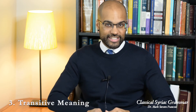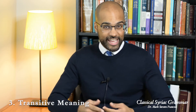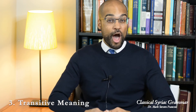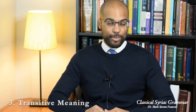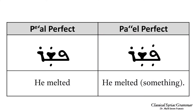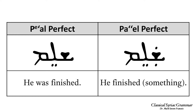Third, verbs that are intransitive in the Pe'al — verbs that don't take a direct object — can sometimes become transitive in the Pa'al. For example, 'pashar' means 'he melted' in the Pe'al, while in the Pa'al it means 'he melted something.' And 'shalem' means 'he was finished' in the Pe'al, while in the Pa'al it means 'he finished something.'